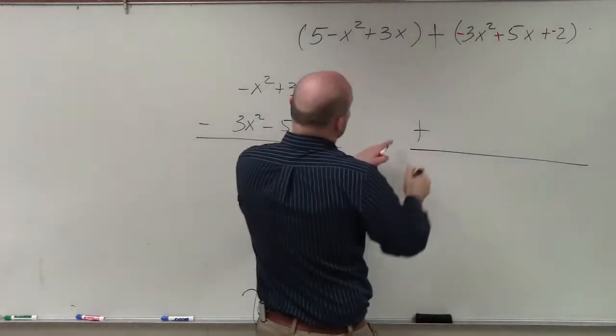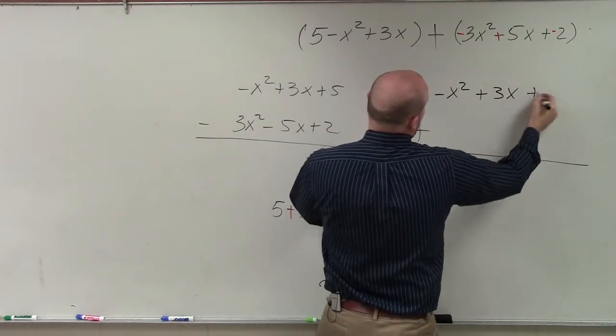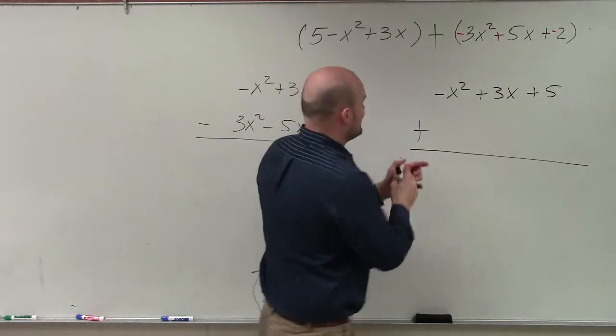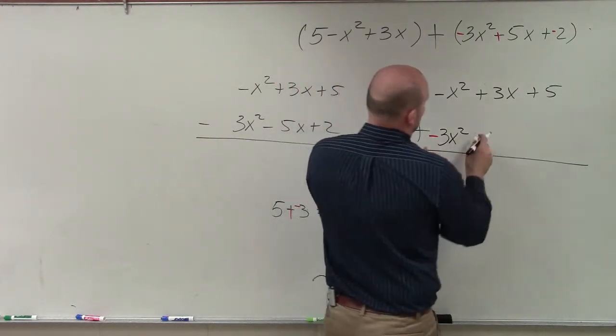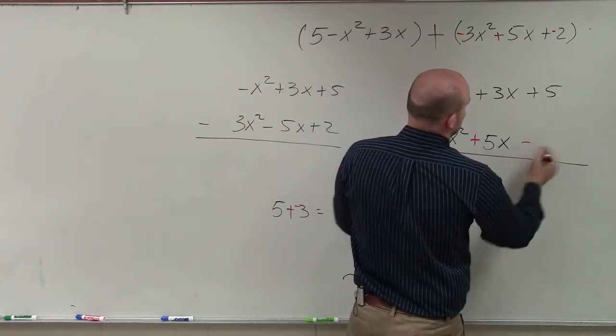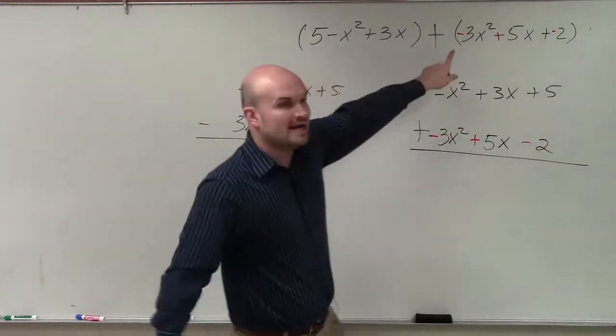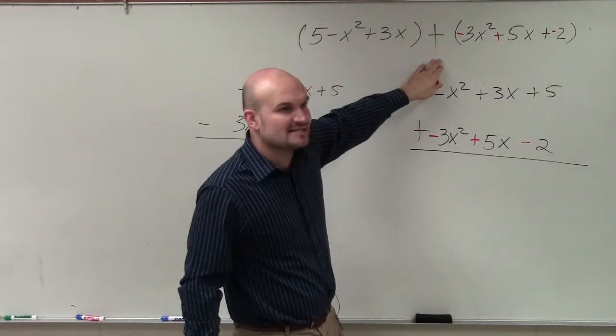So now I'm adding, but now I have -x² + 3x + 5. And now I'm adding -3x² + 5x - 2. So does everybody see how I changed the sign? By changing the sign, I can rewrite it as an addition problem, right?